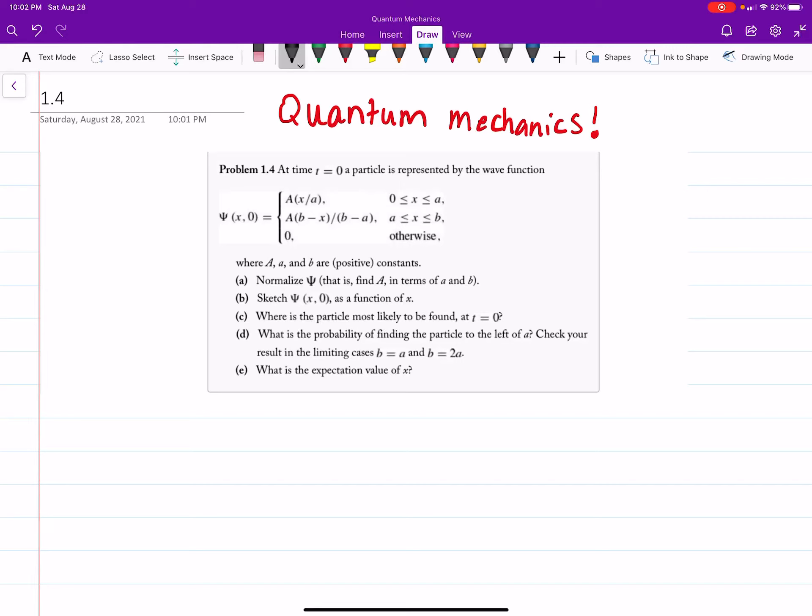Alright, so this video is going through a question out of Griffiths. This is Griffiths' quantum mechanics book. It's the most recent edition, I believe it's like the third or fourth. It's the big red book with the Schrodinger cat on it.